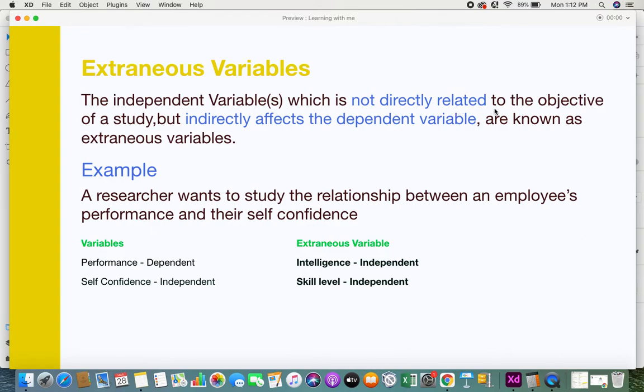An extraneous variable is an independent variable which is not directly related to the objective of a study but indirectly affects the dependent variable. These particular variables are known as extraneous variables. I'll give you an example.